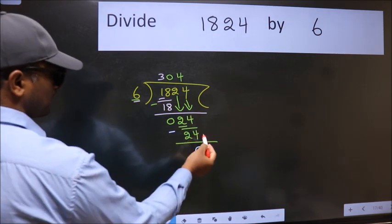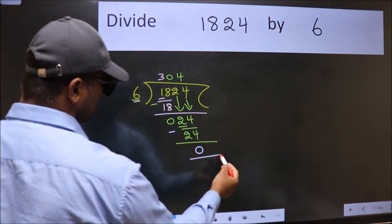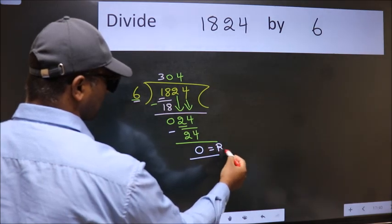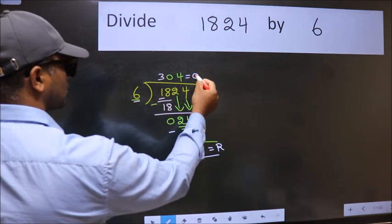No more numbers to bring it down. So we stop here. This is our remainder and this is our quotient.